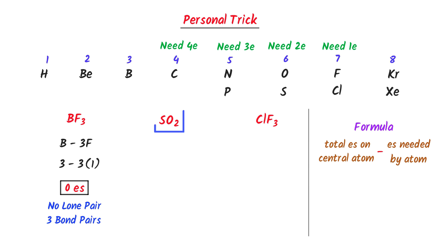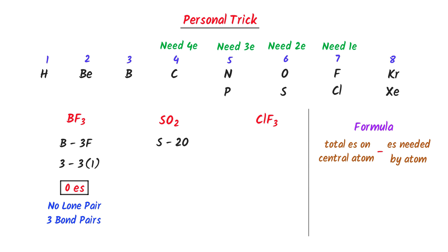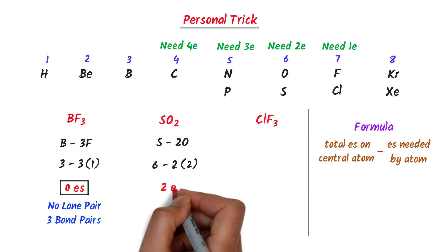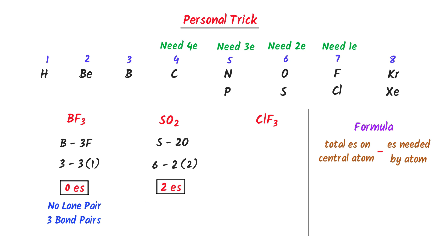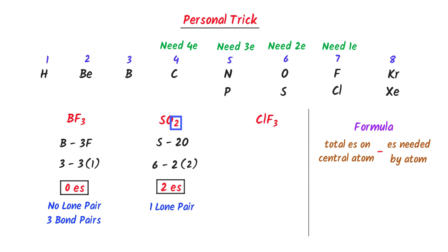Now in case of SO₂, I write S minus 2O because here sulfur is the central atom. We know that there are 6 electrons present on the central atom, minus 2, and oxygen needs 2 electrons. So I get 6 minus 4 equals 2. This 2 means 2 electrons, so we say that 1 lone pair of electrons is present. This 2 subscript means that there are 2 bond pairs of electrons present.